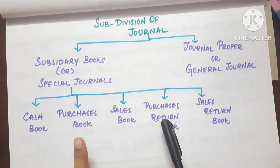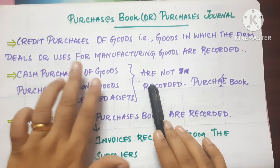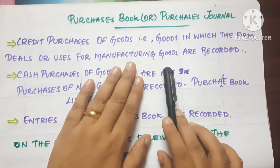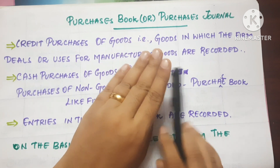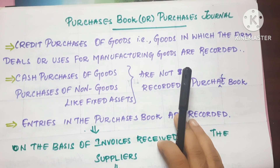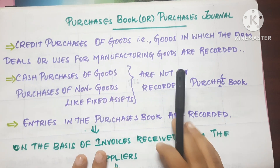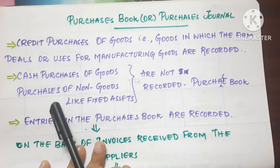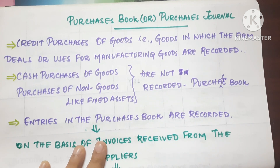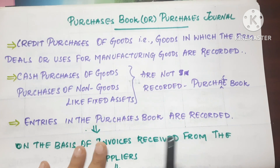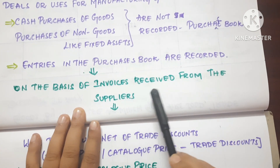First, we will see what a Purchase Book is. The Purchase Book, or Purchase Journal, records credit purchases of goods — that is, goods which the firm deals in or uses for manufacturing. Cash purchases of goods and non-goods like fixed assets are not recorded in the Purchase Book. So the Purchase Book records only credit purchases of goods.